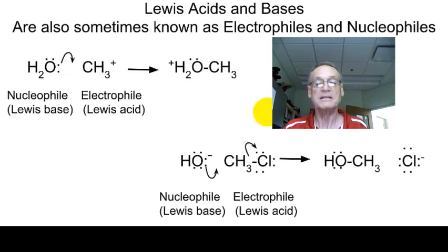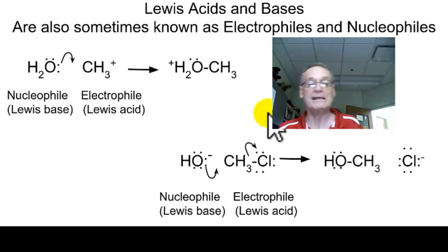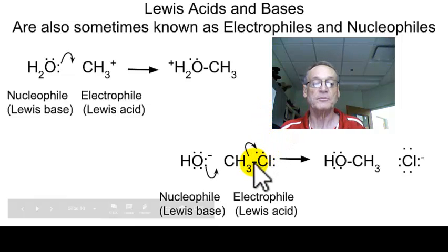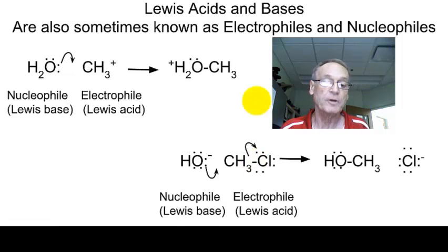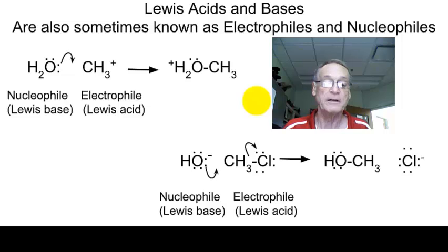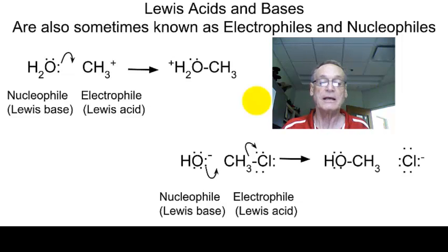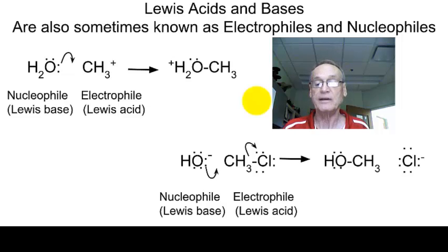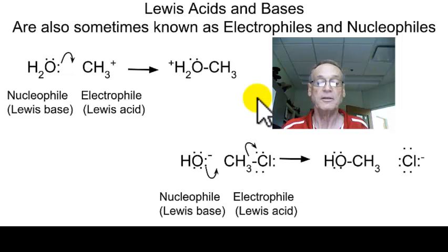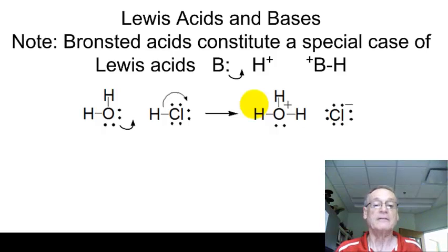Although it doesn't seem to be electron-deficient, the carbon with the three hydrogens is having this pair of electrons in between pulled away from the carbon by the chlorine, and so that carbon is in fact electron-deficient. It wants to find a pair of electrons that it can replace. So the pair on the oxygen moves in, the bond between the carbon and the chlorine moves out. The hydroxide is the nucleophile or the Lewis base. The methyl chloride is the electrophile or the Lewis acid.